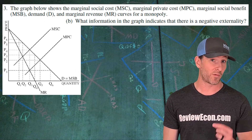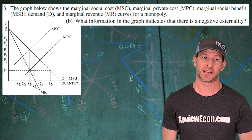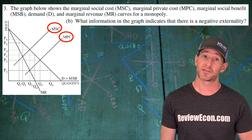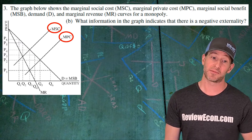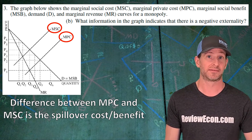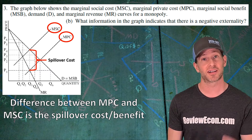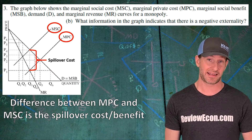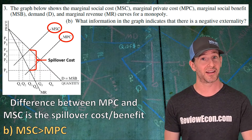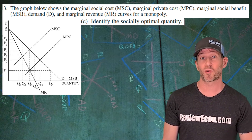Question B asks us to identify what information on this graph indicates there is a negative externality within this market. Look at the marginal cost curves: the marginal private cost is the lower one and the marginal social cost is the upper one. The difference between them is the spillover cost. Since the marginal social cost is greater than the marginal private cost, that gap between the two curves is a spillover cost, which means it is a negative externality. All you have to do is state that marginal social cost is greater than marginal private cost.